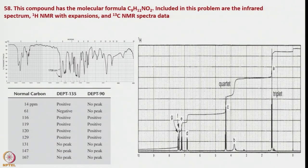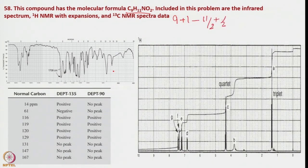Now let us return to a mass/NMR-related problem. This compound has the molecular formula C₉H₁₁NO₂. Included are the infrared spectrum, ¹H NMR spectrum, and ¹³C NMR spectral data. We must identify the structure. First, the hydrogen deficiency index (HDI) = (9+1 – 11)/2 + 0.5 = 5. This means at least one aromatic ring plus additional unsaturation contributing to a total HDI of 5.